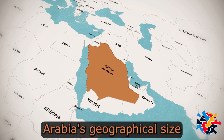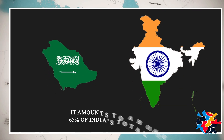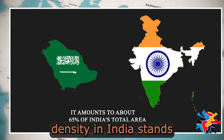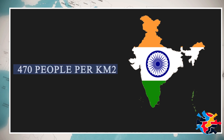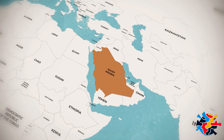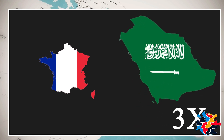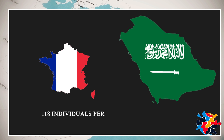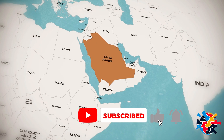Consider, for example, Saudi Arabia's geographical size in relation to India. It amounts to about 65% of India's total area, yet the population density in India stands at a staggering 470 people per square kilometer, indicating a much denser populace. In contrast, Saudi Arabia's land area is approximately 3.5 times larger than that of France, yet France's population density is notably higher, hosting just over 118 individuals per square kilometer. That would make Saudi Arabia among the least densely populated countries in the world.